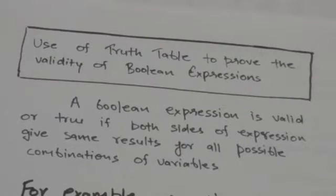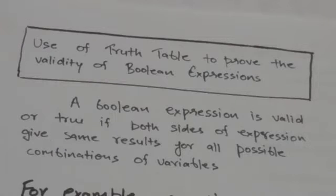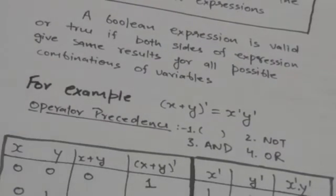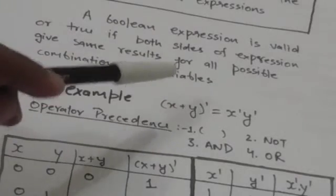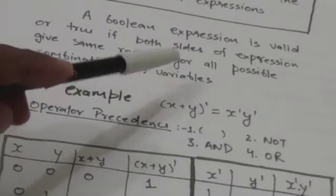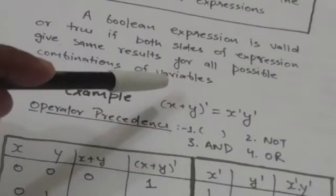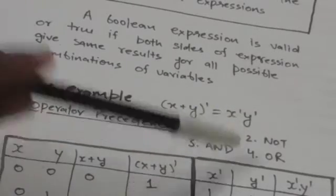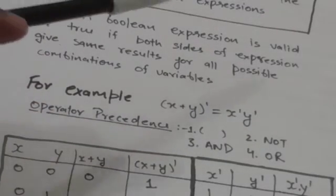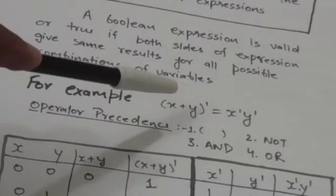Hello friends, welcome back to tutorials. In this tutorial we will learn how we can use a truth table to prove the validity of boolean expressions. A boolean expression is valid or true if both sides of the expression give the same results for all possible combinations of variables. For example, there is an expression: X plus Y complement, that is the complement of X OR Y, equals X naught AND Y naught.